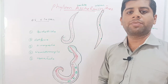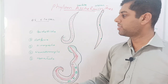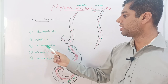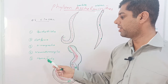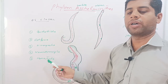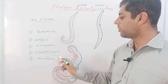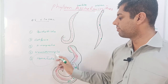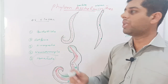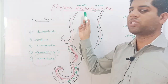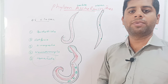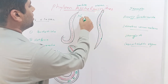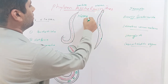The Aschelminthes phylum comprises five classes: Gastrotricha, Rotifera, Kinorhyncha, Nematomorpha, and Nematoda. Out of these five classes, the most important is class Nematoda, and therefore the phylum Aschelminthes is also called phylum Nematoda. Here we will consider this phylum as phylum Nematoda.